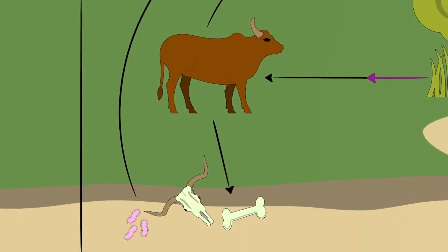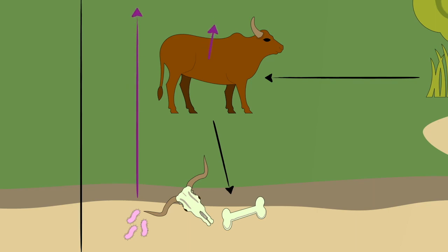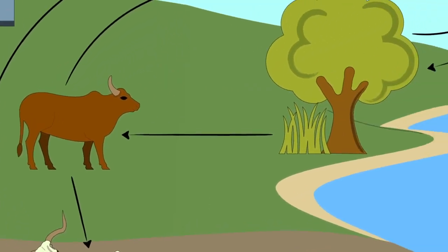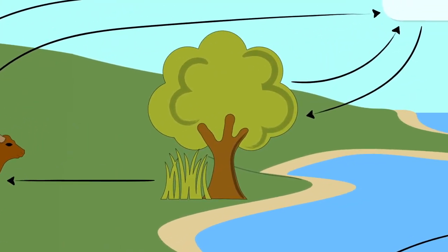Animals consume carbon by eating it. When they die, they decay. Decomposers and animals release carbon dioxide to the atmosphere when they respire. Plants remove carbon dioxide from the atmosphere via the process of photosynthesis and return it when they respire.